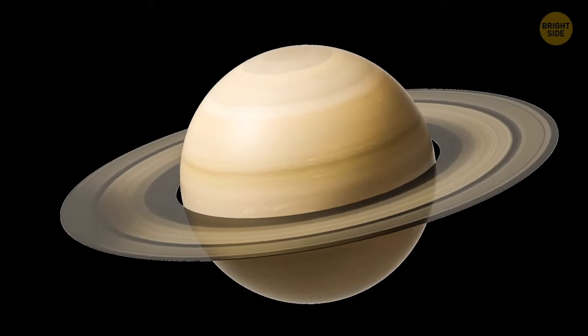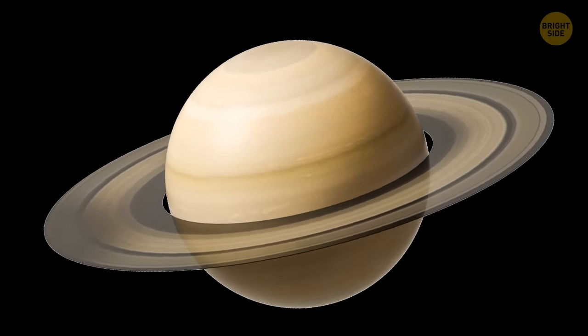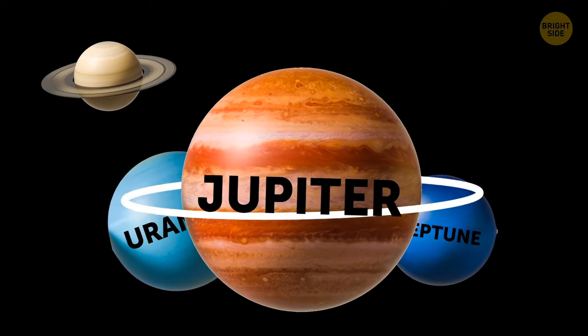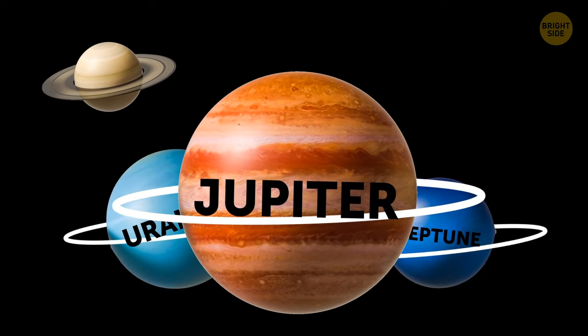Saturn isn't the only planet that has rings. Gas giants Uranus, Neptune, and Jupiter have rings of their own, but they are thin and almost impossible to see.